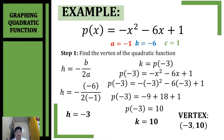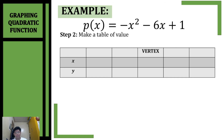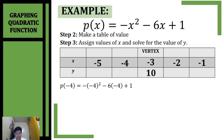Now that we have our vertex, let's proceed to step 2: make a table of values. For our table of values, place our vertex at the middle — we have (-3, 10). Step 3: assign values of x and solve for y. I recommend numbers closer to the x-coordinate of our vertex. For the right side we have negative 2 and negative 1, and for the left side we have negative 4 and negative 5. Let's substitute the values of x into our original function, starting with negative 4.